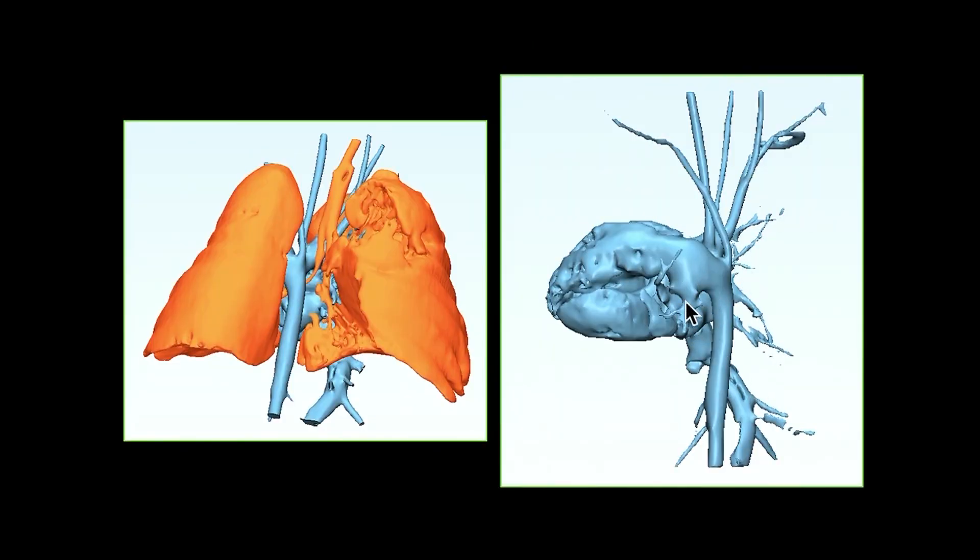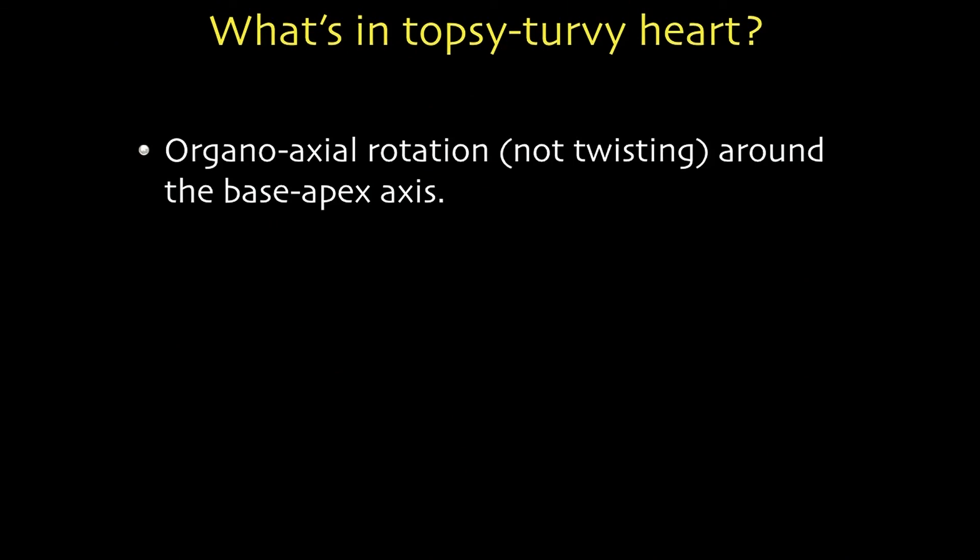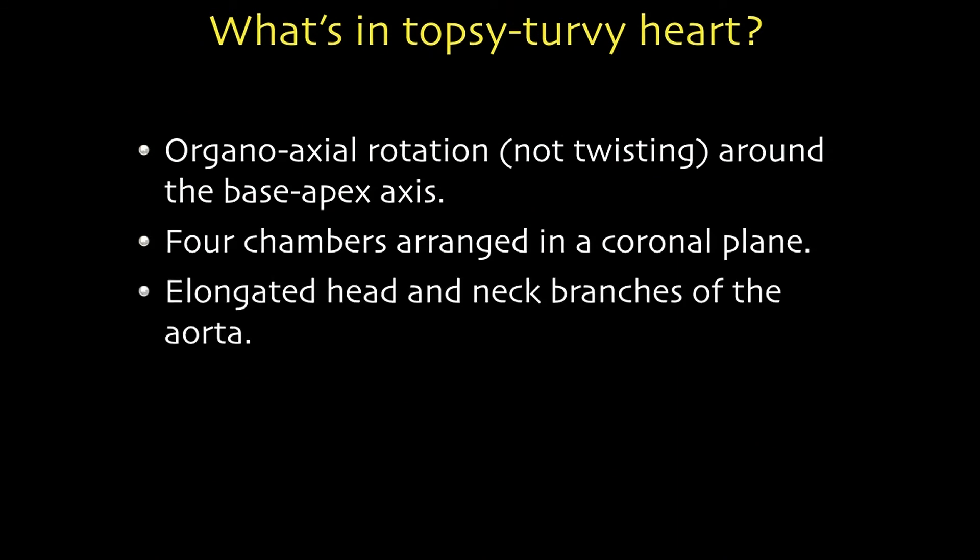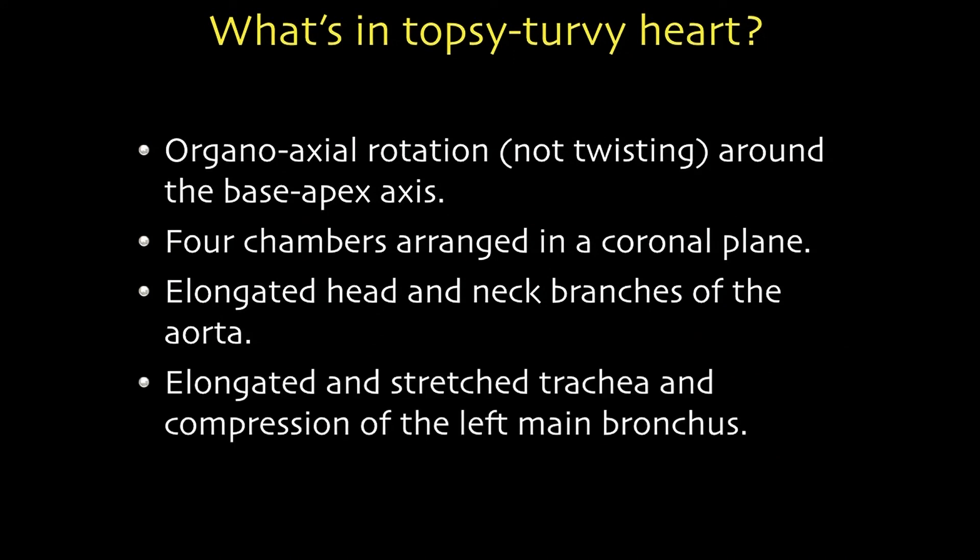So here is an example. The great arteries are down here. And then you can see trachea comes down. And then aorta is significantly stretched. One thing that I want to emphasize, after we reported one case, there are a couple of cases followed. Very interestingly, most of the cases are in Middle Eastern or South Eastern families. There certainly is some genetic component happening. So what's the topsy-turvy heart? Organo-axial rotation. Not twisting around the base apex axis. Four-chamber view arranged in a coronal plane. Elongated head and neck branches of the aorta. And an elongation and stretch of the trachea and compression of the left main bronchus.